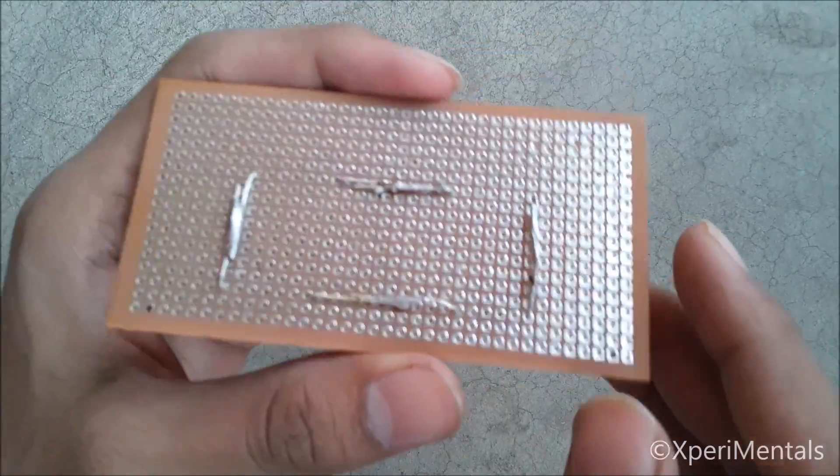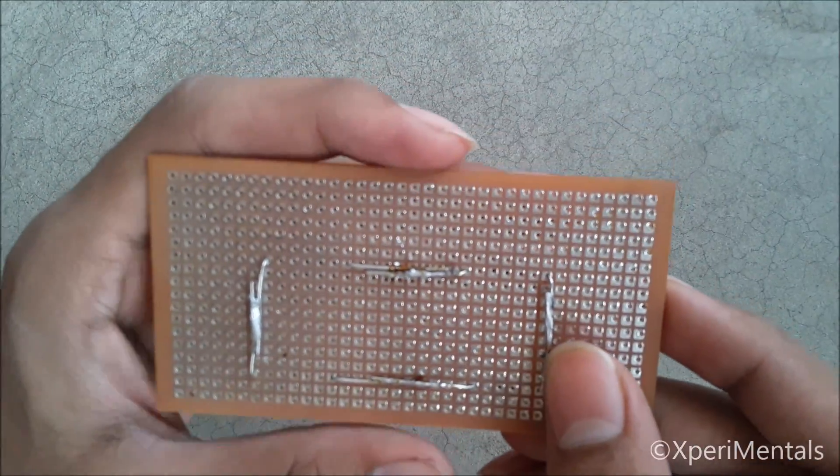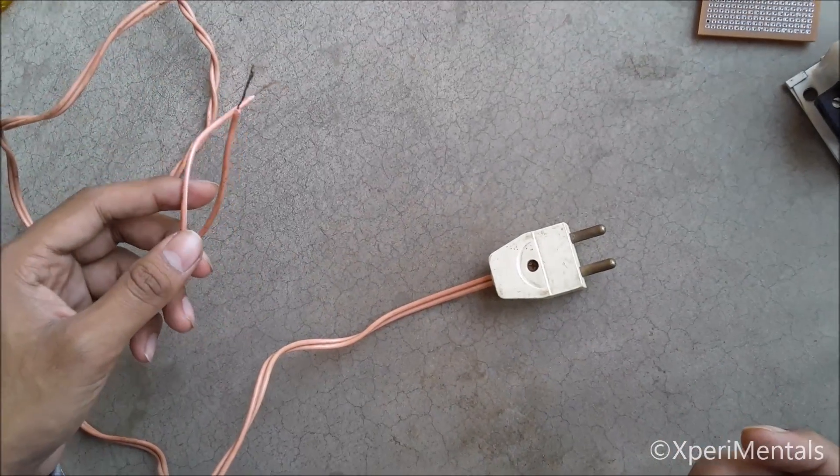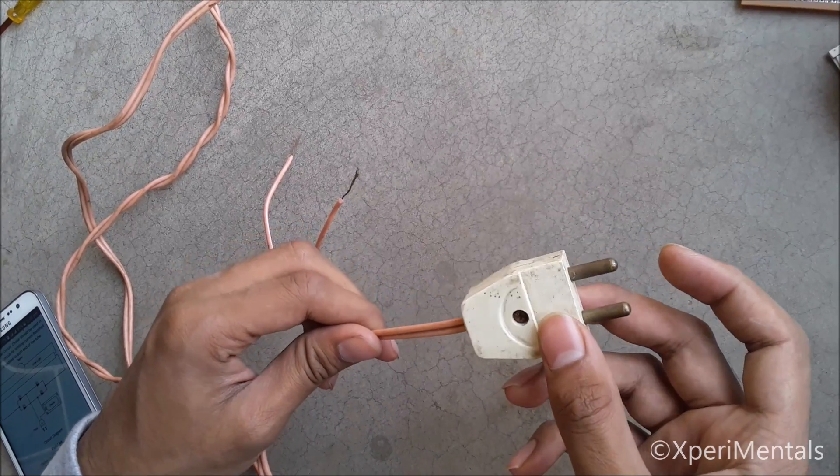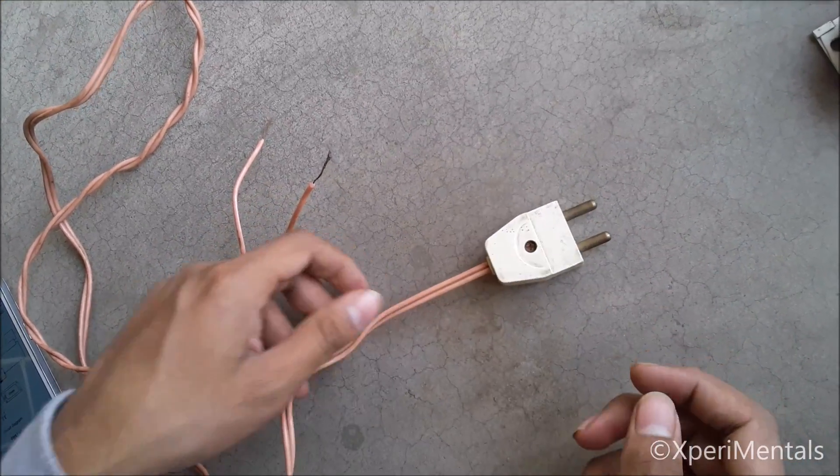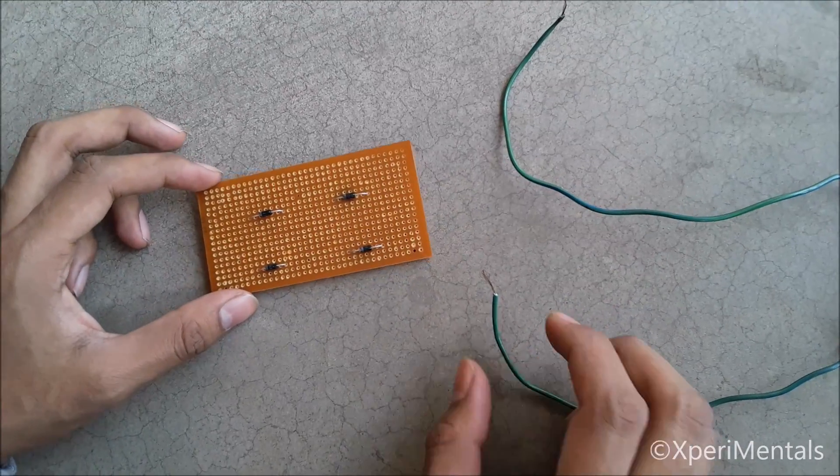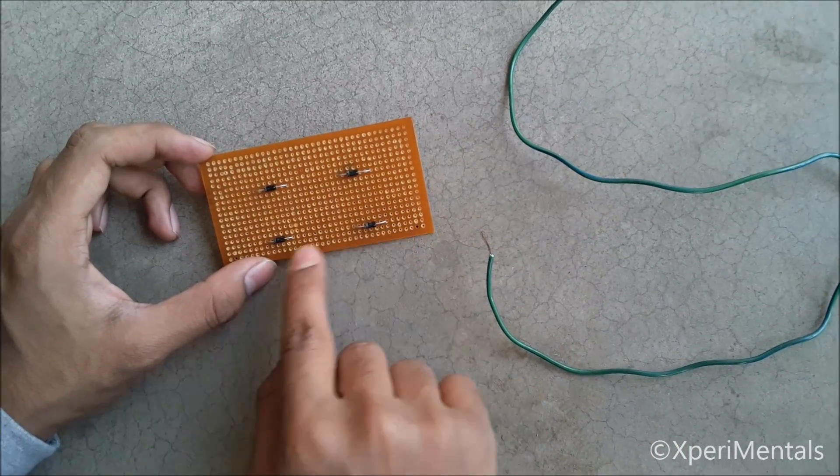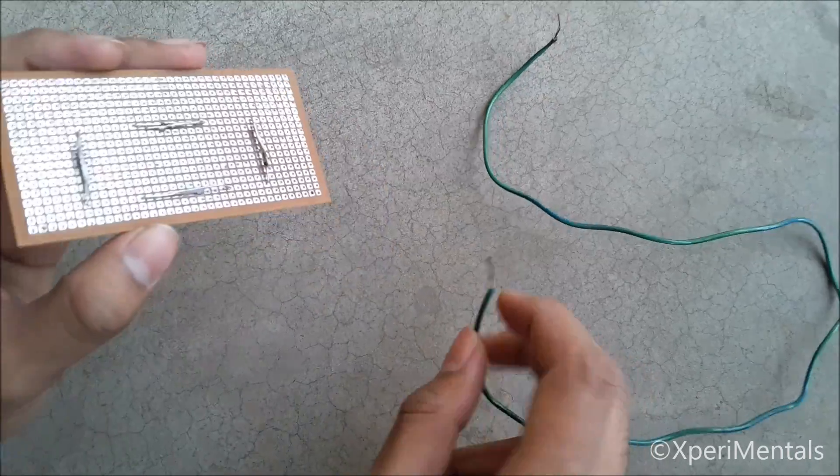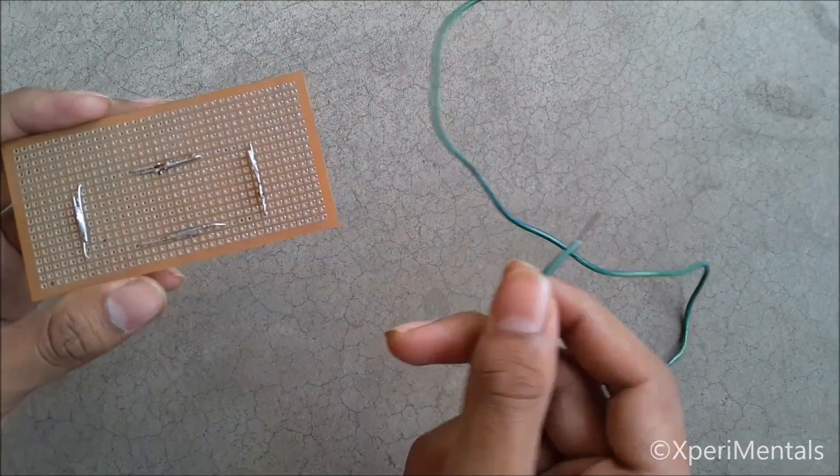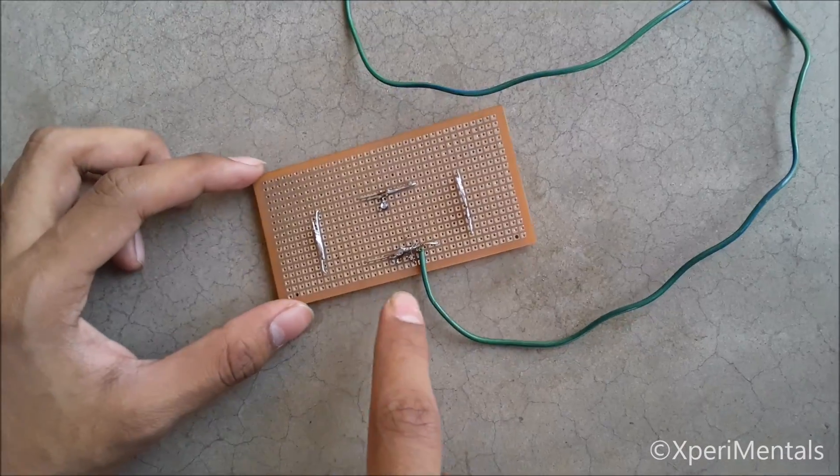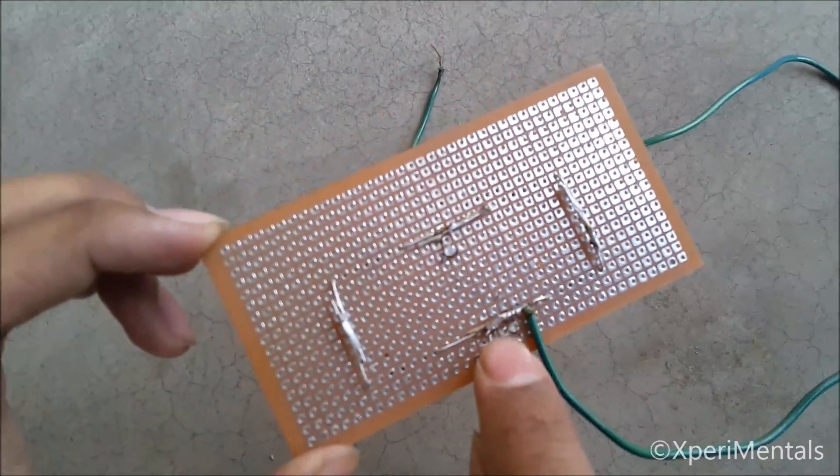Take two wires of same length and attach a plug at one of the ends. Now take another wire and join this wire at the junction point of the two lower diodes. Solder this wire here. You can see we have soldered this wire here.